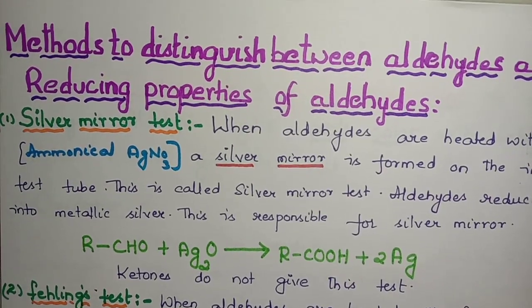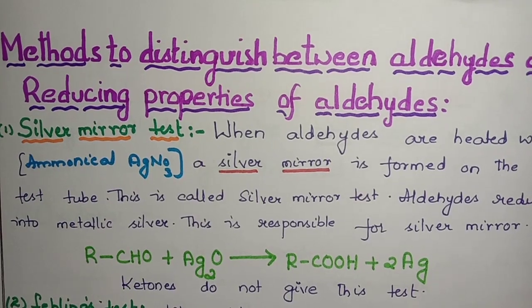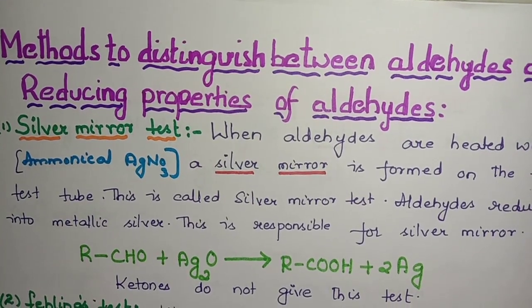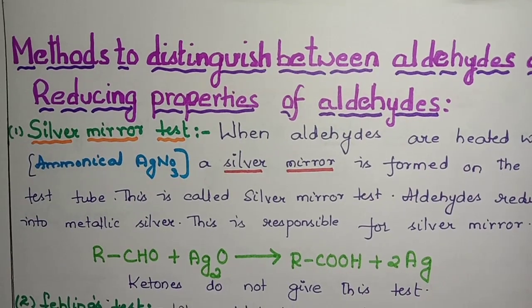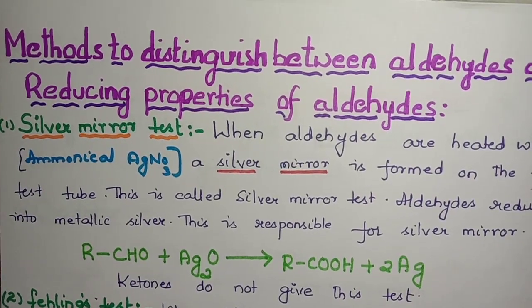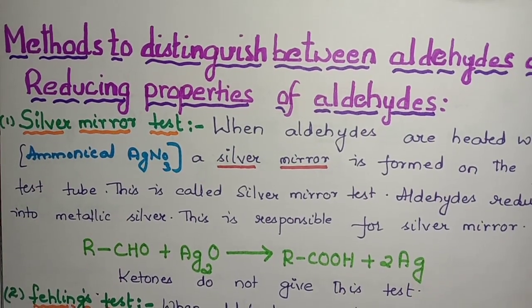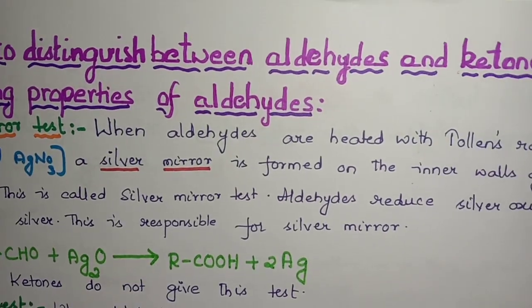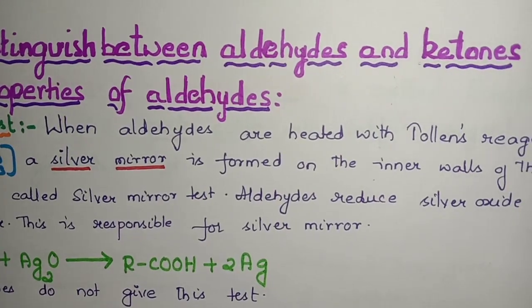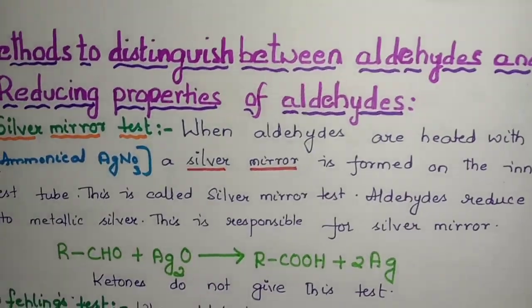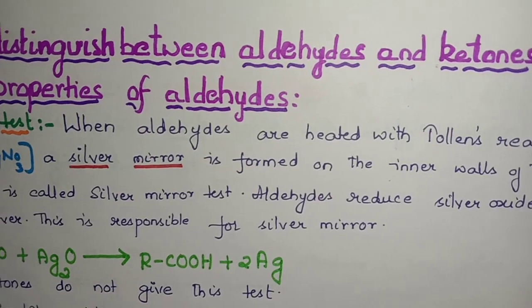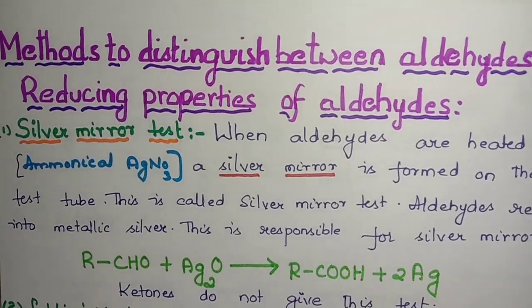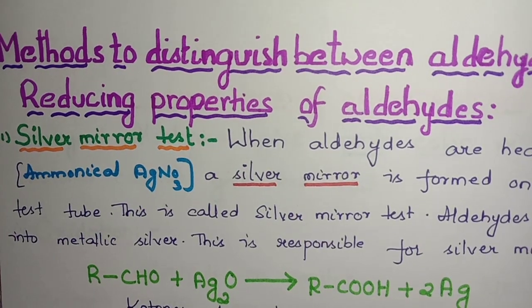Hello students, in this video we are going to learn a new topic from carbonyl compounds. Till now we have learned the chemical properties of aldehydes and ketones. Now let us see how to differentiate aldehydes and ketones. This goes under the subheading methods to distinguish between aldehydes and ketones, also called reducing properties of aldehydes.